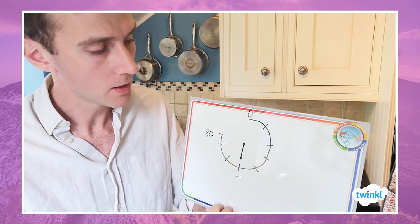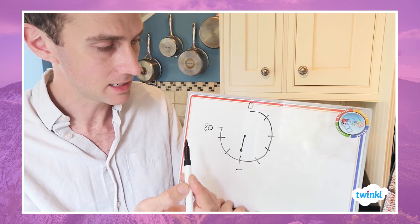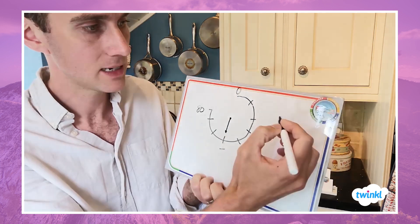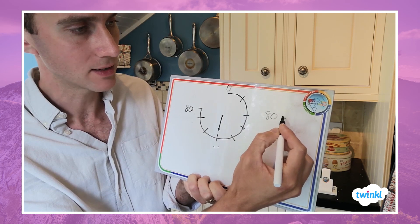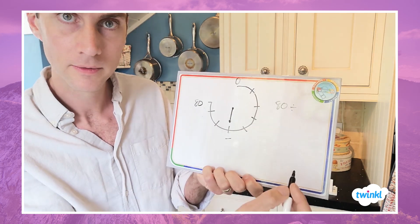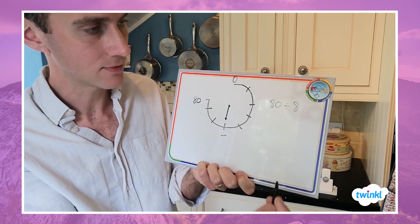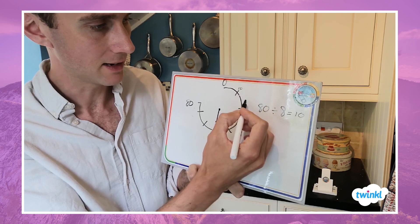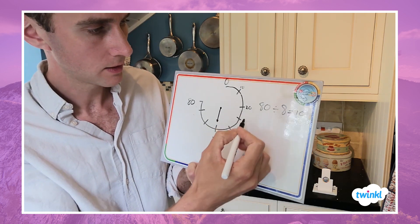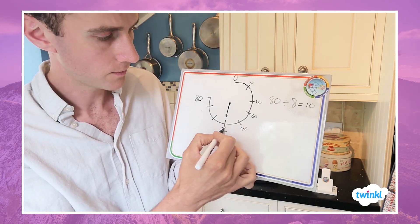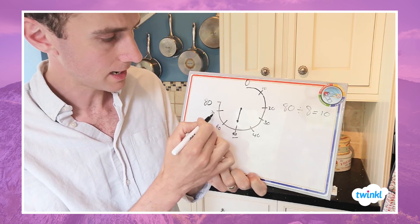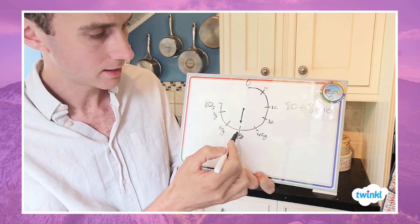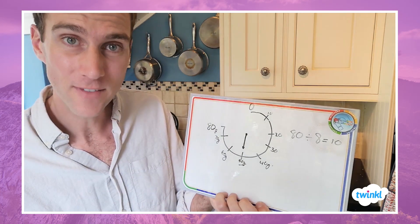However, there's a quicker way. Look at your end number — you know that it maxes out at 80 — and count the intervals: 1, 2, 3, 4, 5, 6, 7, 8 — that's 8 intervals. To work out what each interval is worth, do the total divided by the parts: 80 divided by 8 equals 10. Now I know that each interval is worth 10 grams: 10, 20, 30, 40, 50, 60, 70, 80. If my arrow is pointing there, then my apple must have a mass of 50 grams.